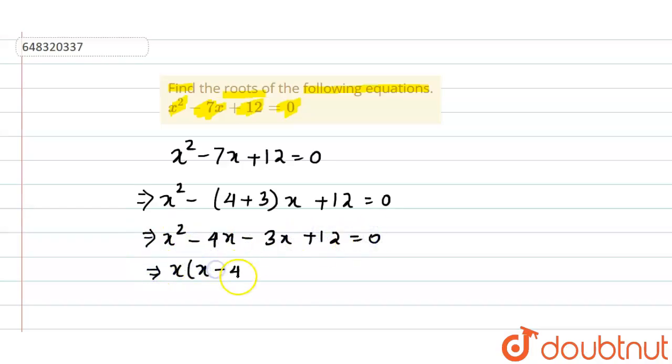So x into (x - 4) minus 3 into (x - 4) equals 0. So we get (x - 4) into (x - 3) equals 0.